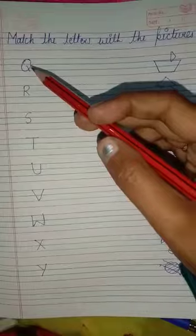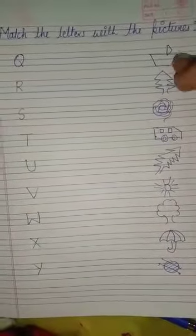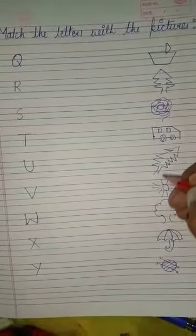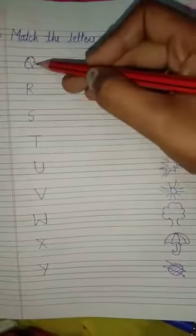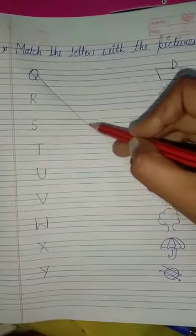What is this? This is Q. Q for, tell me. Q for Quill. Yes. So now we match Q for Quill.